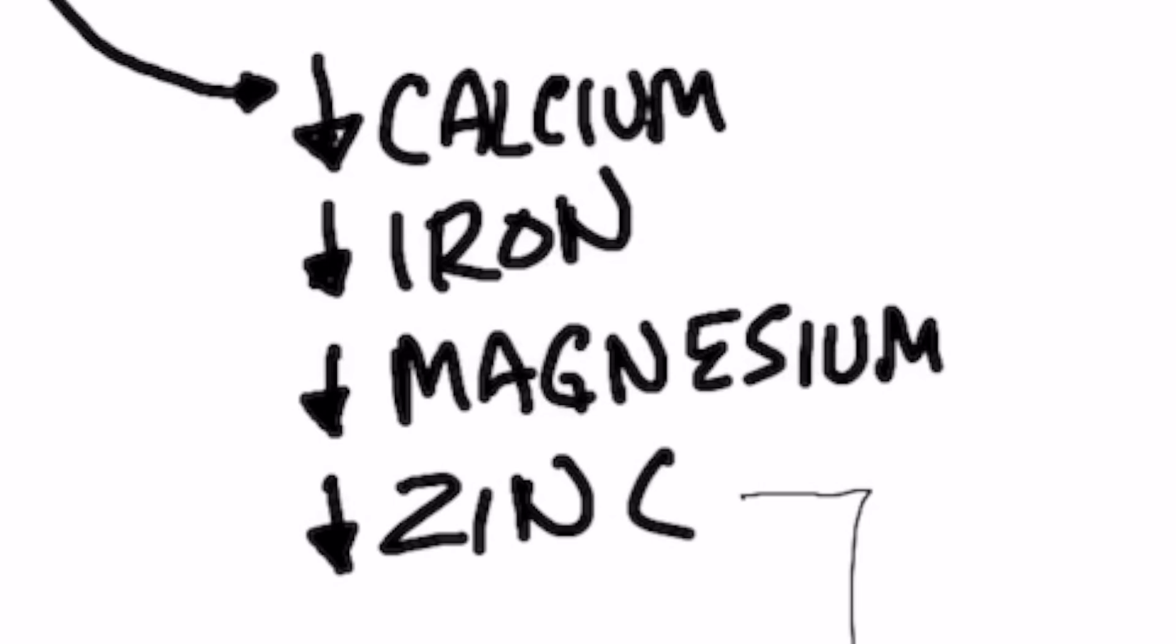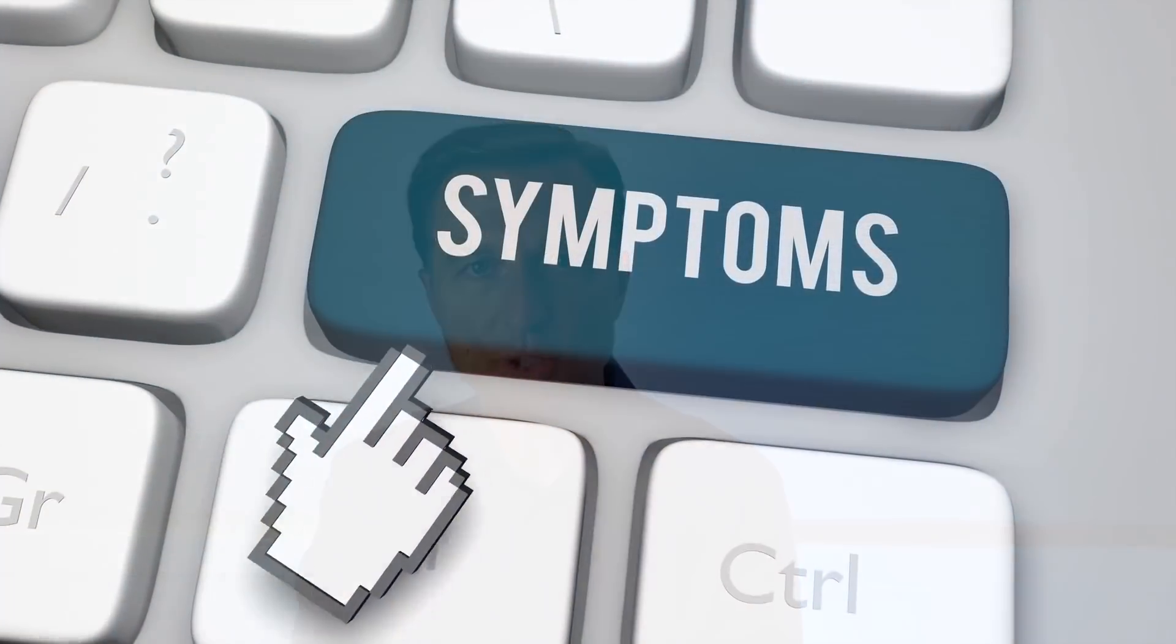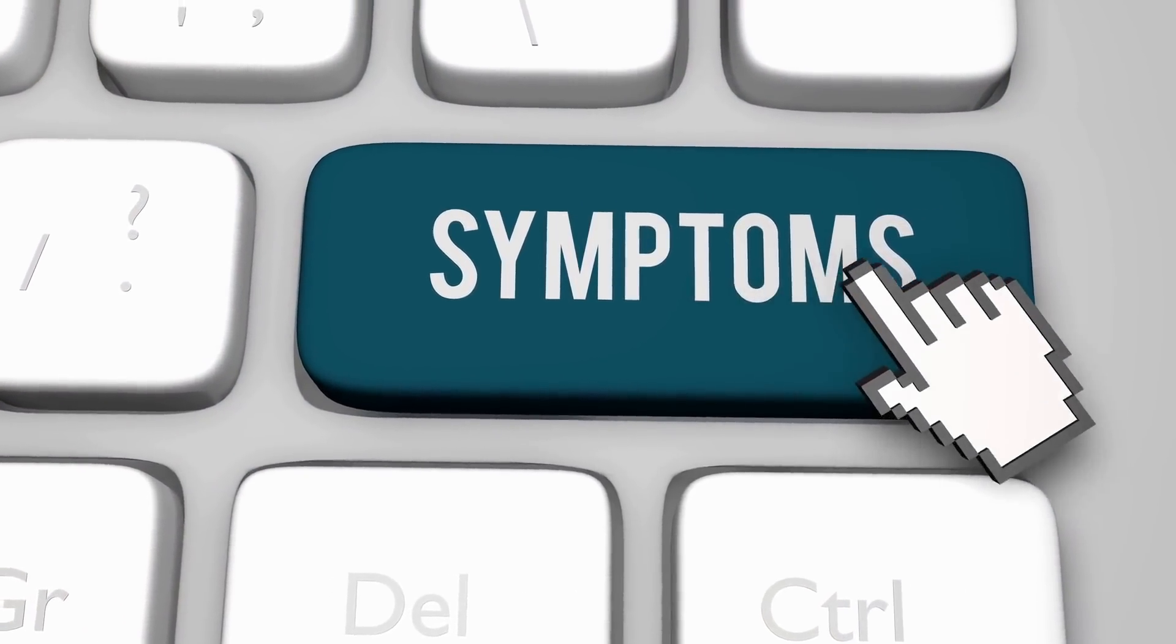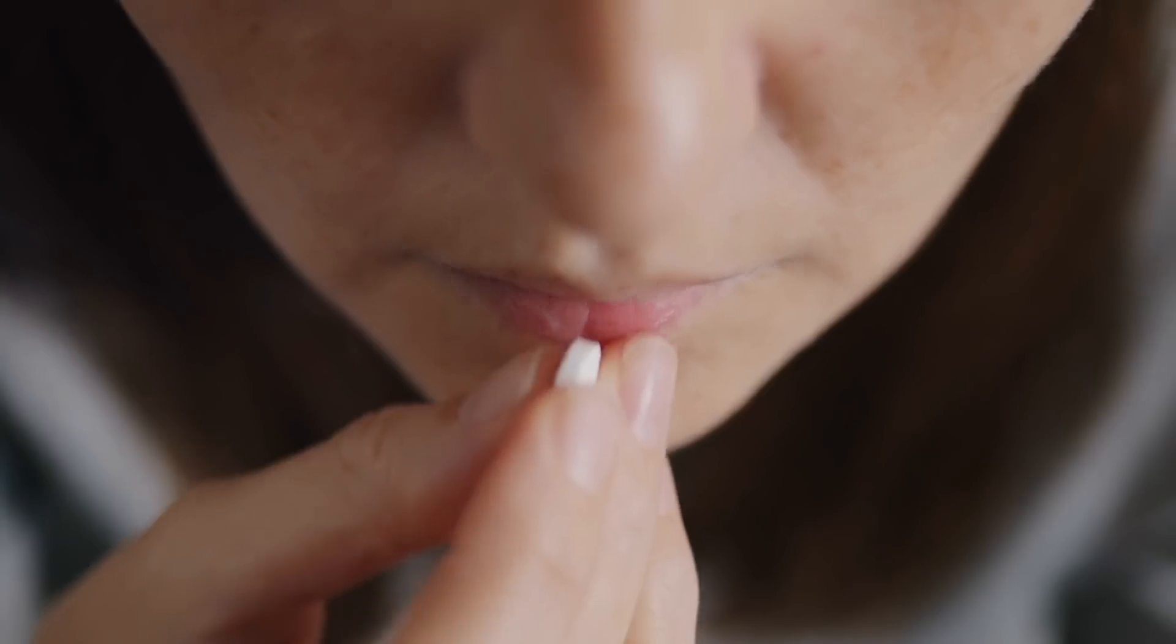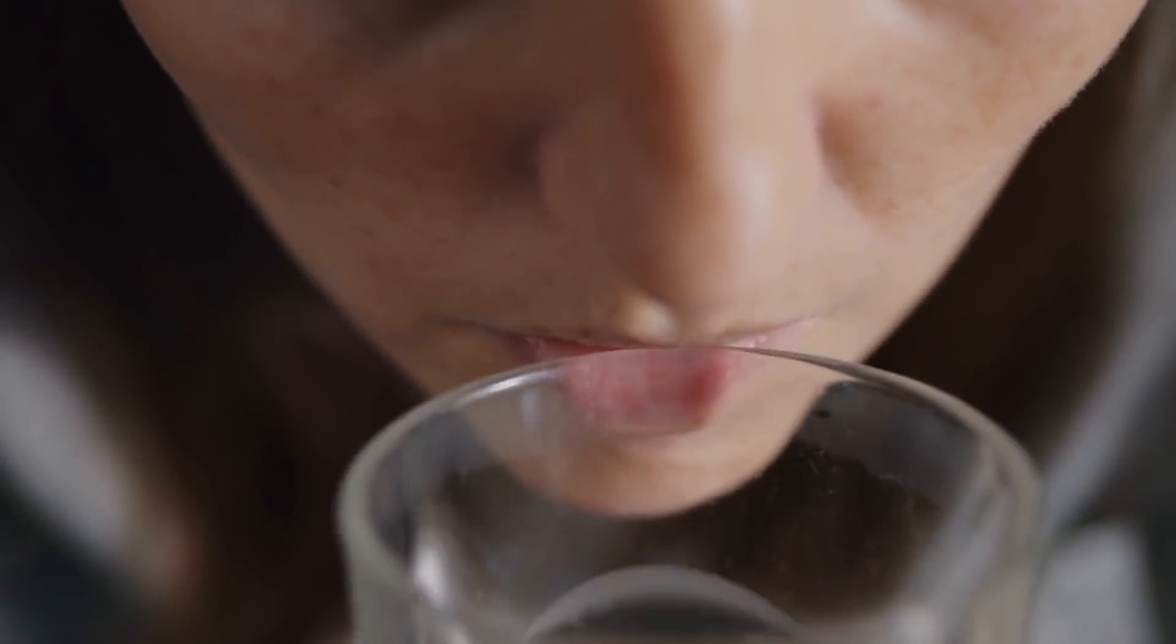But the problem is it pulls out other minerals too, like magnesium, zinc, and many other minerals. So you have to make sure that you're putting back in the minerals that you need while you're pulling out the minerals that you have too much of. Most of the symptoms related to EDTA relate to zinc deficiency. As long as you're putting some of these minerals back into the body, you won't have the symptoms.